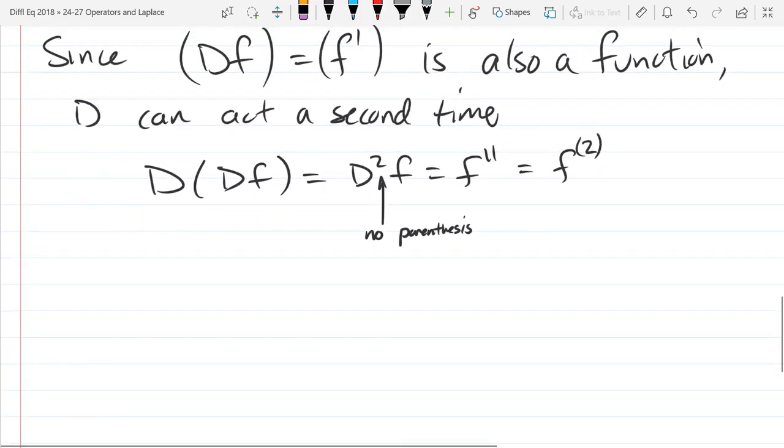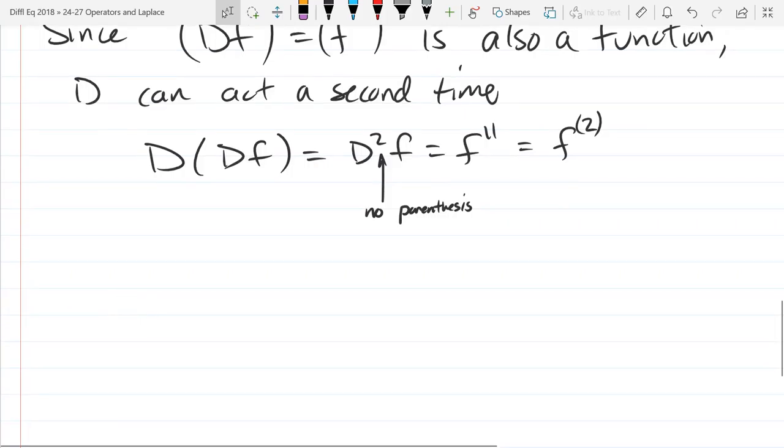At some point you took precalculus two. I can't remember far enough back exactly what classes you took. I definitely taught precalculus two. What would D^0 mean? How many derivatives would I take? Zero. D^0 of f is just f. Take no derivatives. So D^0 is the identity.